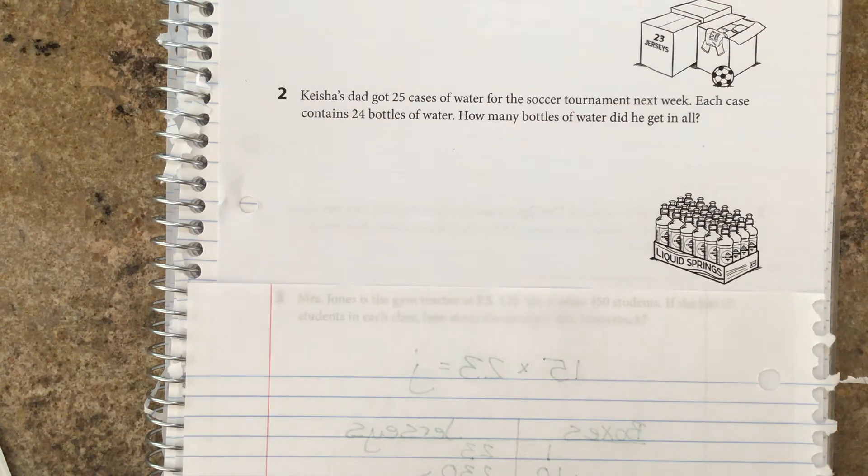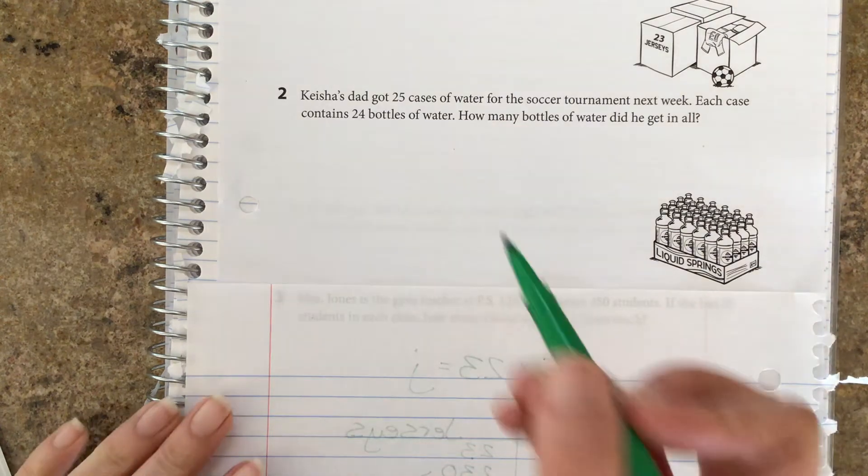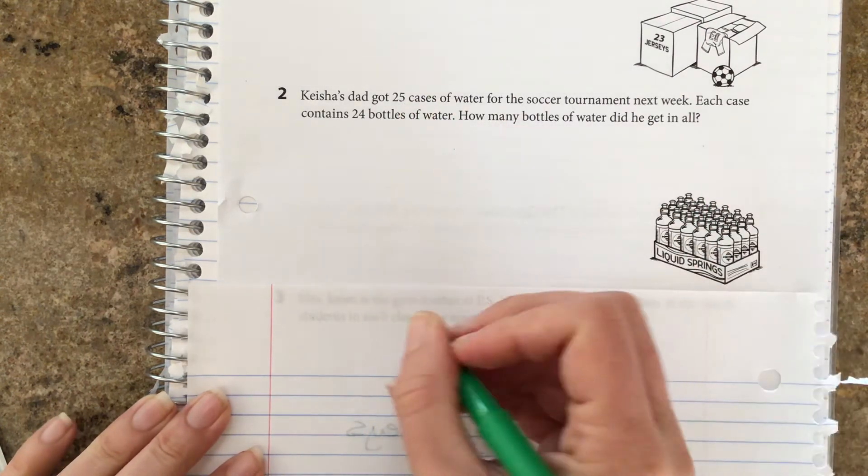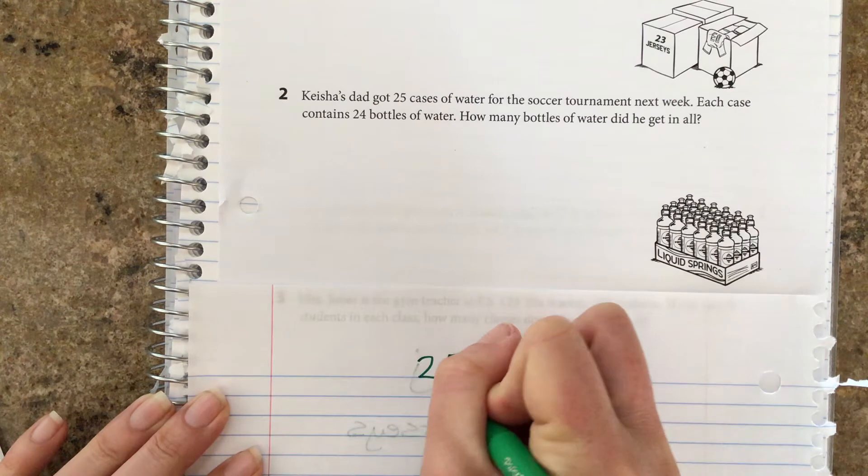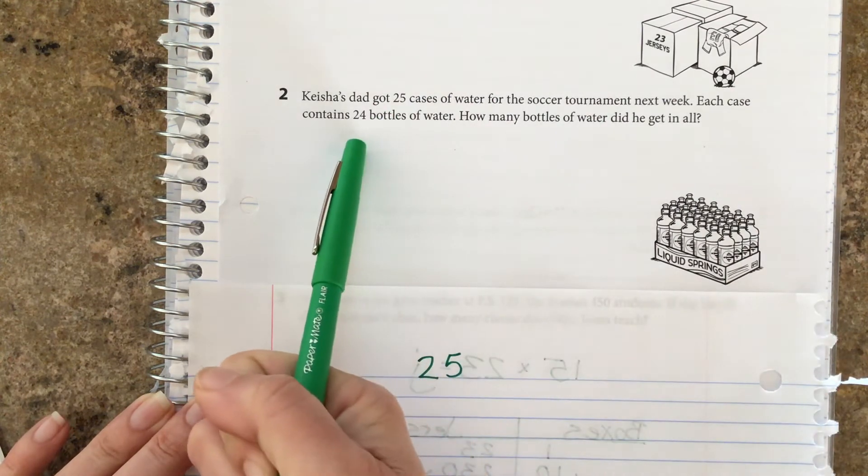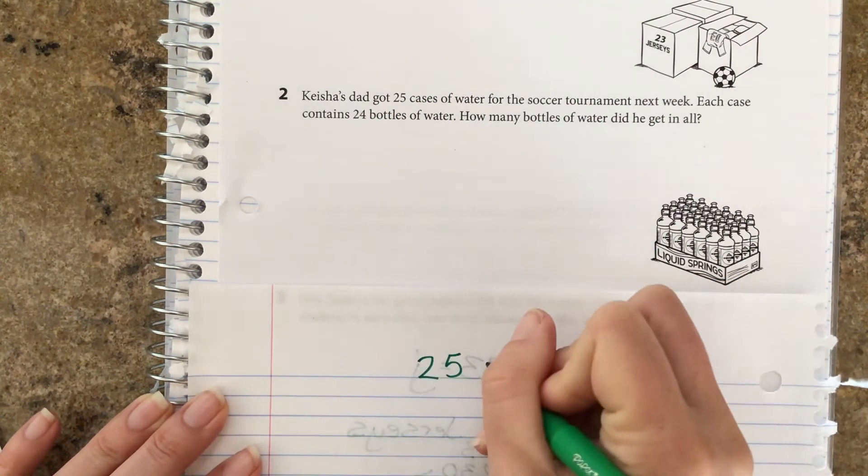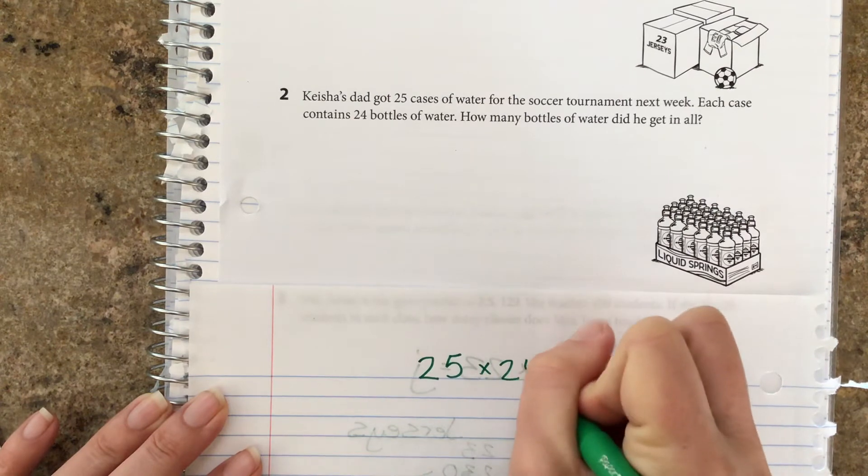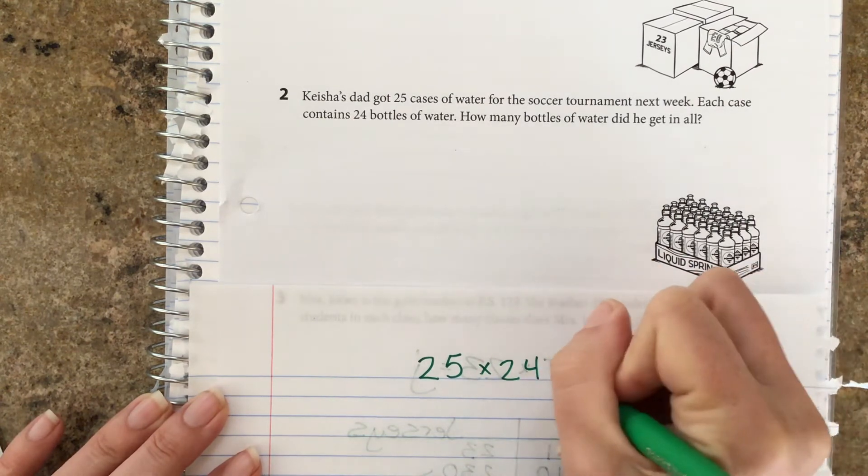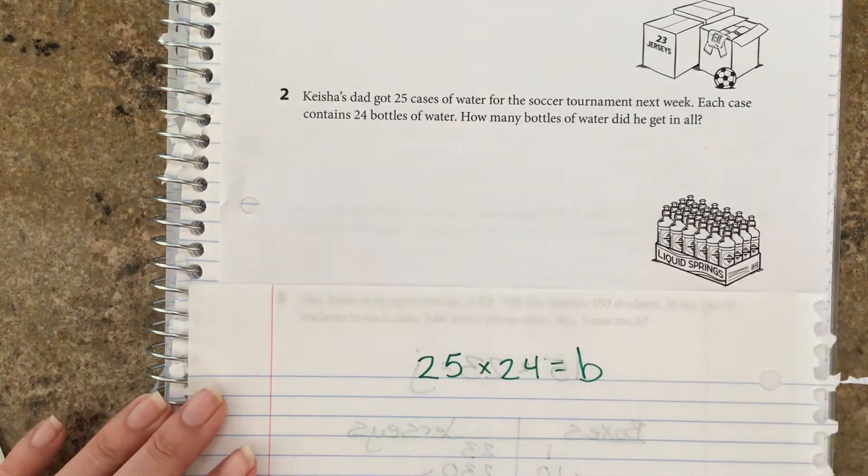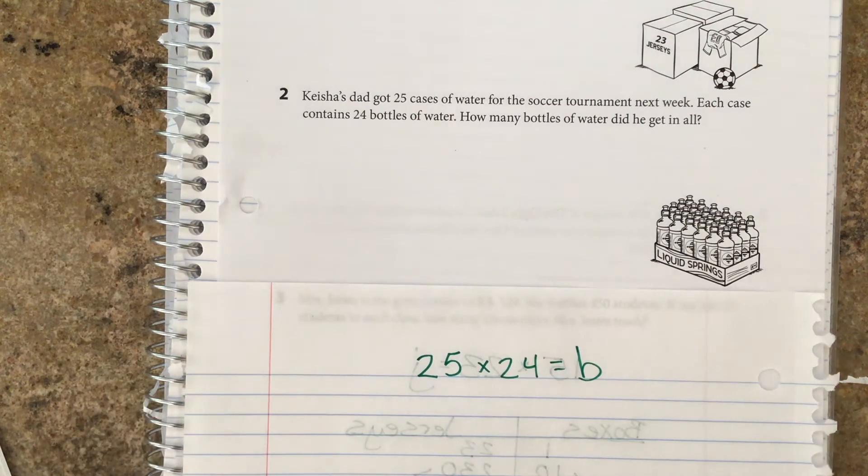The equation is asking us, there's 25 cases of water and there's 24 bottles in each case, so how many bottles of water? And we'll use a B for bottles. So again, you're going to pause it, you're going to do this work, and then we'll see what you did.